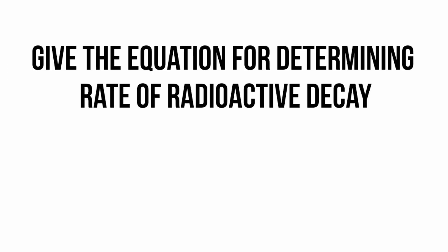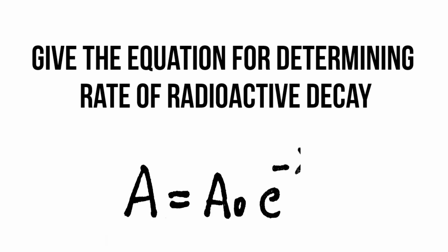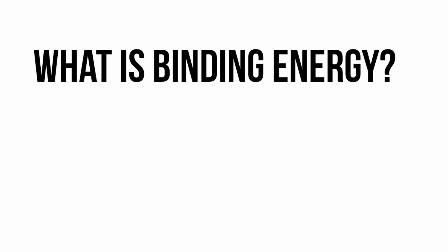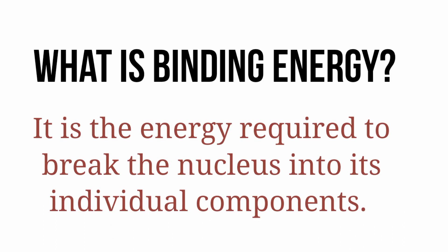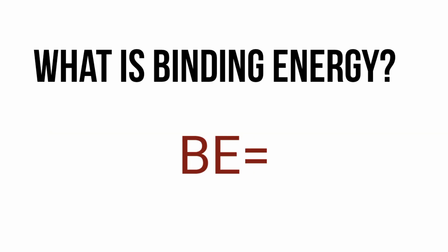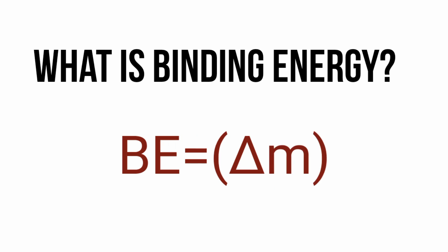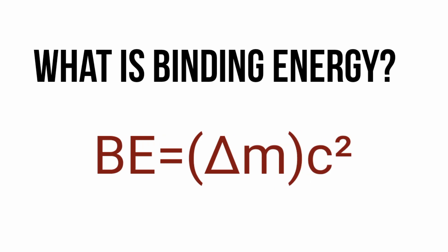Give the equation for rate of radioactive decay: A = A₀ · e^(−λt). What is binding energy? It is the energy required to break the nucleus into its individual nucleons, and binding energy is given as the product of mass defect and c².